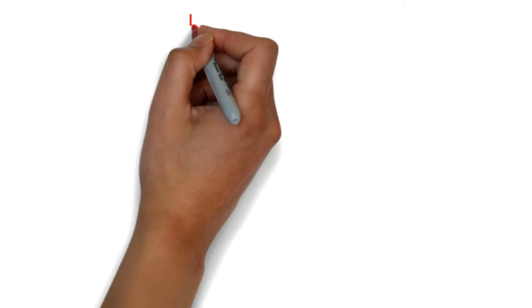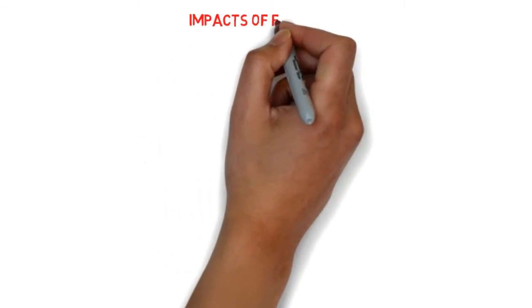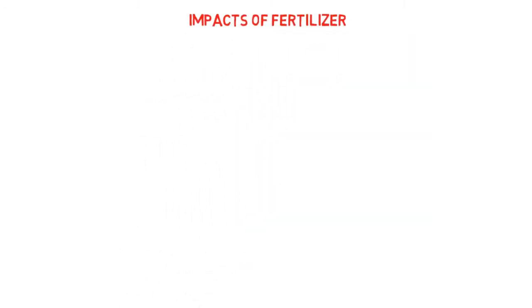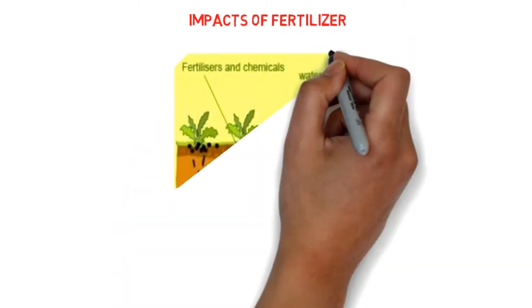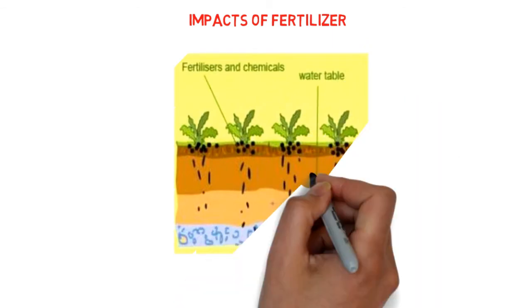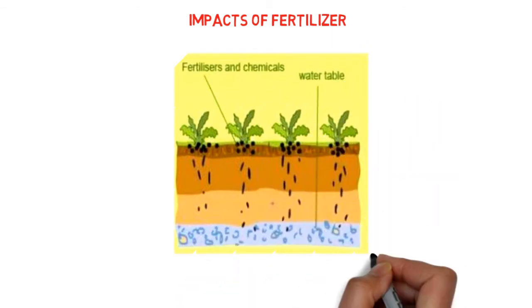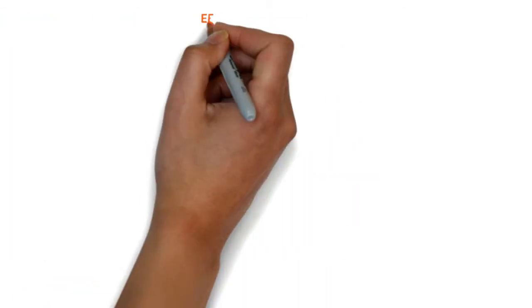Impacts of fertilizer. In the raw material stage, they use potassium nitrate for fastest growing of the potato plants. Fertilizers are contained in the ground and it destroys the ground water.